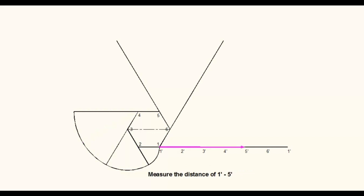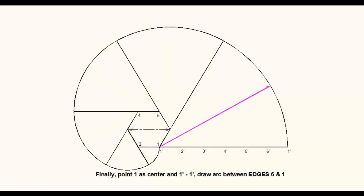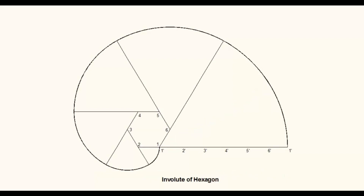Measure the distance of 1-dash to 5-dash on the horizontal line. With corner point 5 as center, draw an arc between edges 4 and 5. Measure the distance of 1-dash to 6-dash on the horizontal line. With corner point 6 as center, draw an arc between edges 5 and 6. Finally, with radius 1-dash to 1-dash, draw an arc between edges 6 and 1. Thus the construction of the involute of a hexagon is complete.